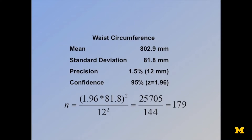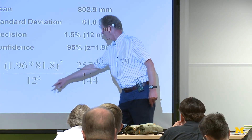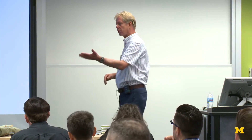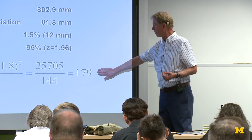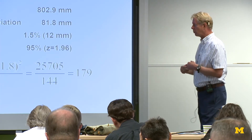For waist circumference — this is a military sample, but it doesn't matter — our mean is 802 millimeters and our standard deviation is 81. We've decided for this particular problem that the precision we need is one and a half percent of the mean, which in this case is 12 millimeters. We've decided we want to be 95% confident that we have the right answer, so we look up on a z-score table and that is 1.96. We throw those numbers in — that's the z, that's the s, that's the c — do the math and we get 179 people. Assuming people come through the door randomly, if I measure 179 people, I will be 95% confident that I know the true population mean within 12 millimeters.